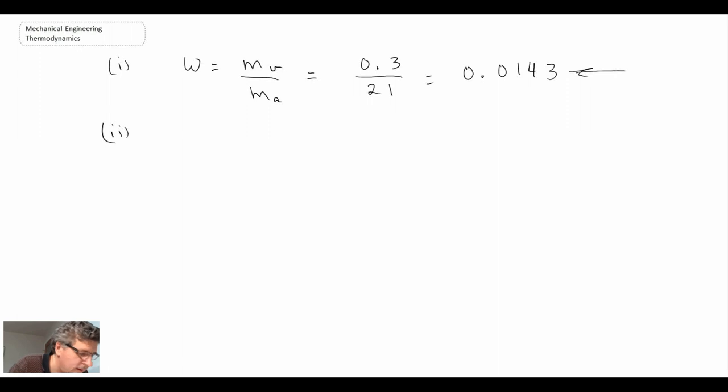Now for the relative humidity, we'll look at one of the equations that we came up with. Here we know P, because that was 100 kPa, we just solved for the specific humidity, so we know that. It's there again.